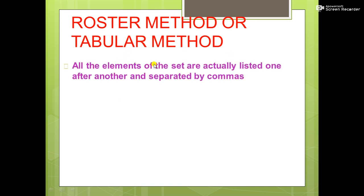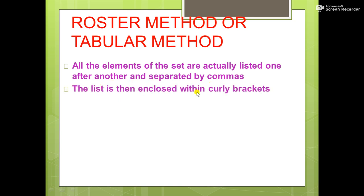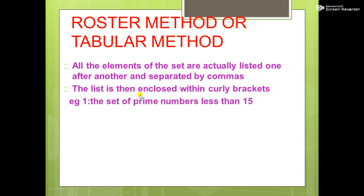Next method is the roster method, also called the tabular method or listing method. All the elements of the set are listed one after another, separated by commas, and enclosed within curly brackets. In all methods, curly brackets are a must. For example, the set of prime numbers less than 15: X = {2, 3, 5, 7, 11, 13}. This is a representation using the tabular or roster method.